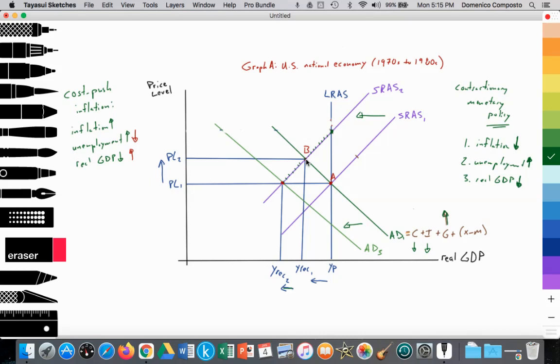Ronald Reagan provided support to Paul Volcker, who was chairman of the Federal Reserve, to engage in contractionary monetary policy. The U.S. Central Bank, or the Federal Reserve Bank, decided to decrease the supply of money, raised interest rates, which would reduce consumption and investment spending. And that would push AD back from AD1 to AD2.